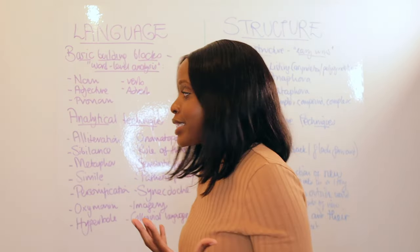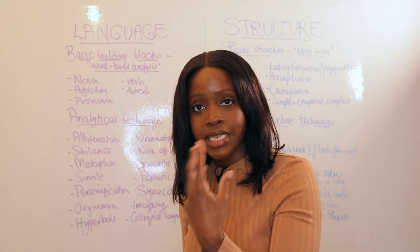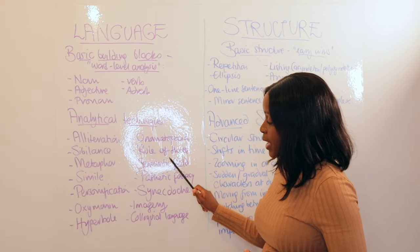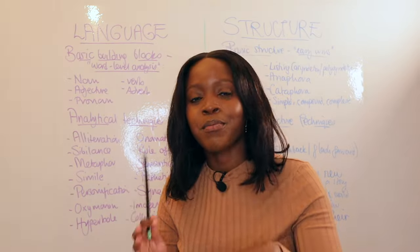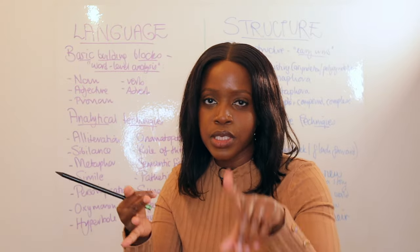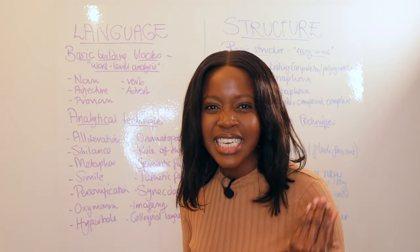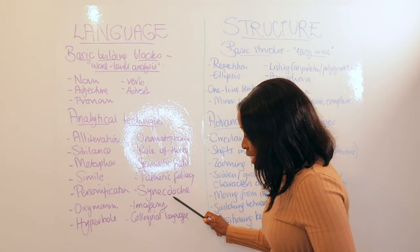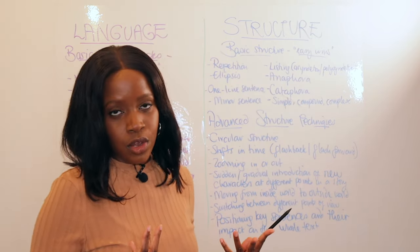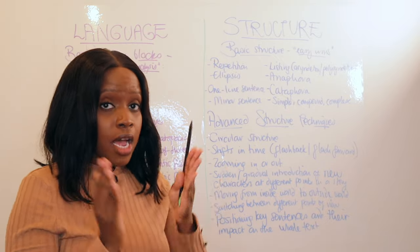The analytical language techniques list to always remember: alliteration, sibilance — these go together as two or more words starting with the same letter, with sibilance specifically for 's' sounds — then metaphor, simile, personification, oxymoron, hyperbole, onomatopoeia, rule of three, semantic field, pathetic fallacy, synecdoche, imagery, and colloquial language. Colloquial language simply means when a writer uses informal language.